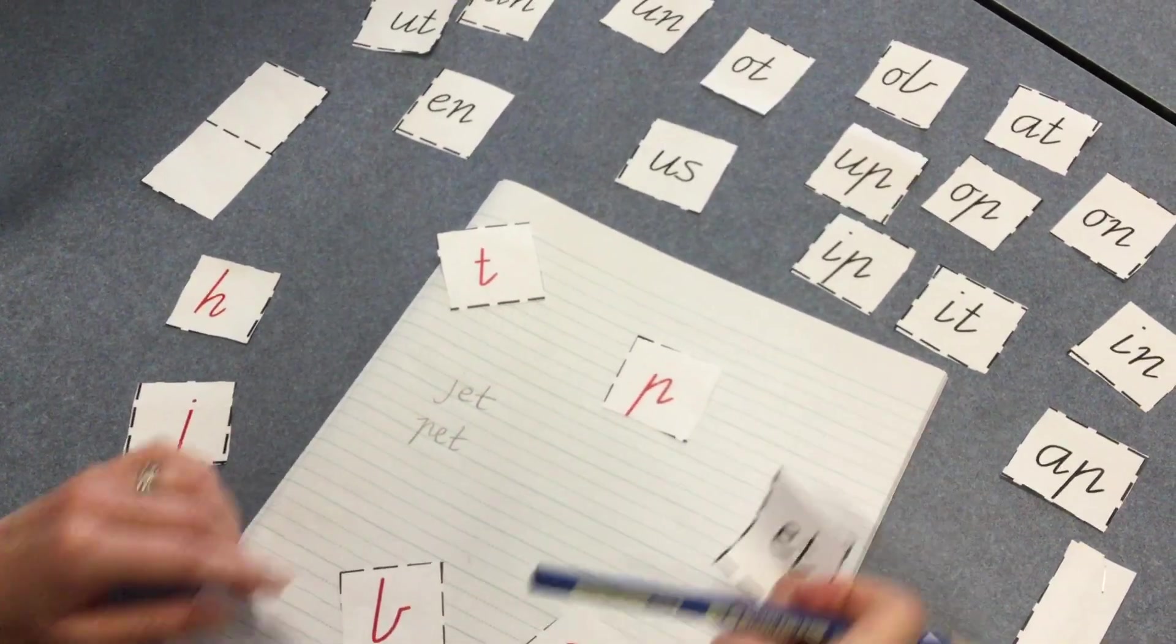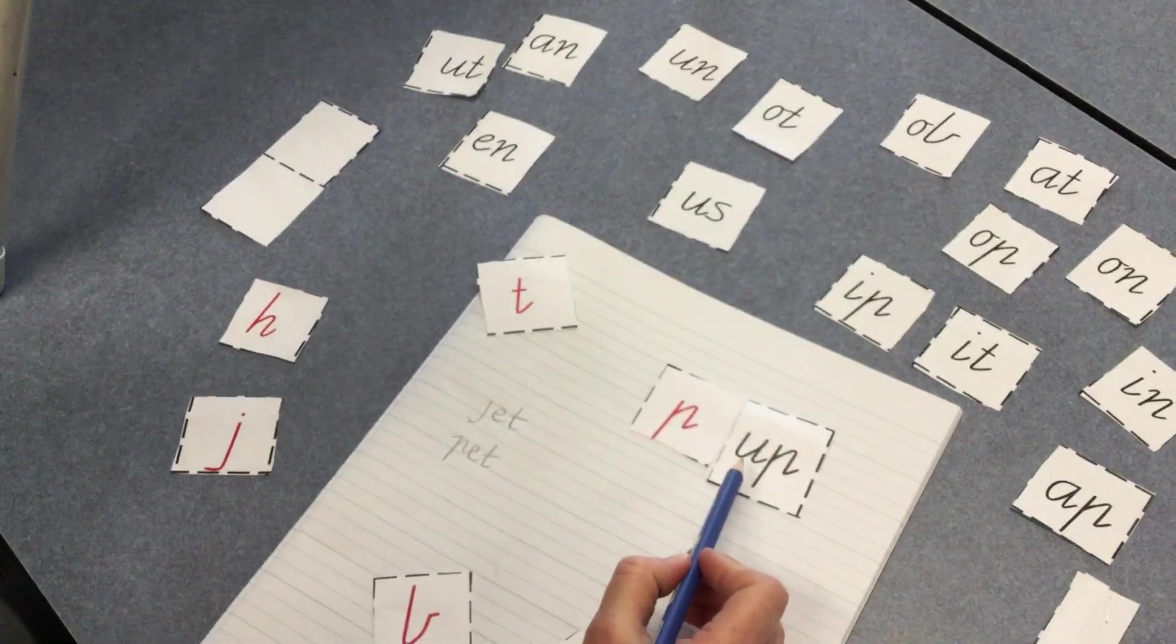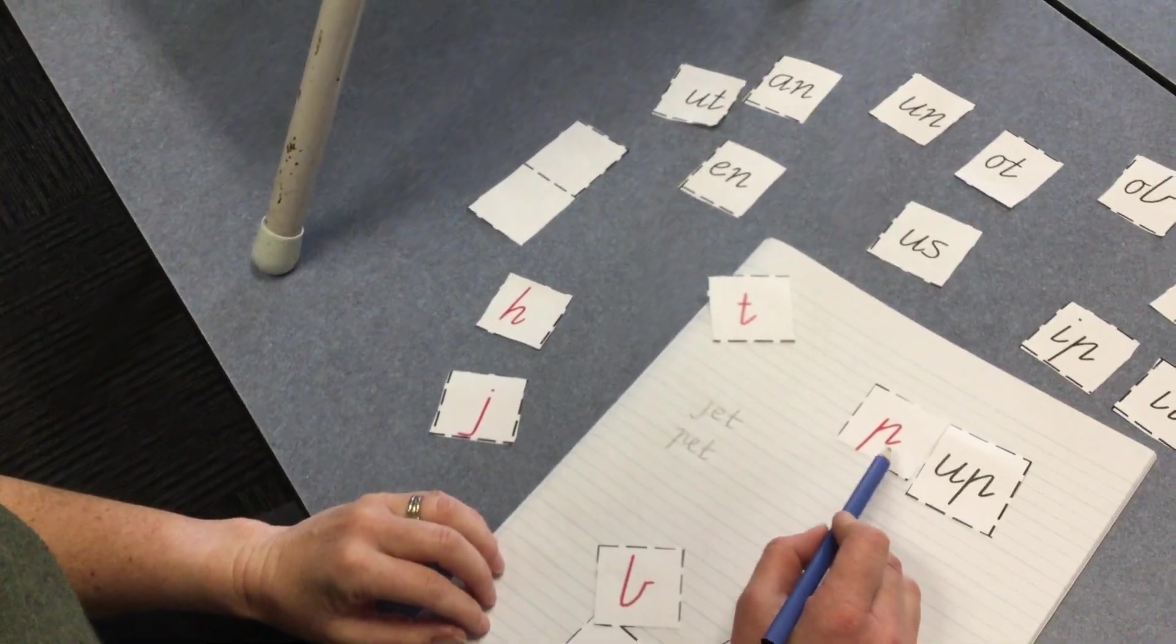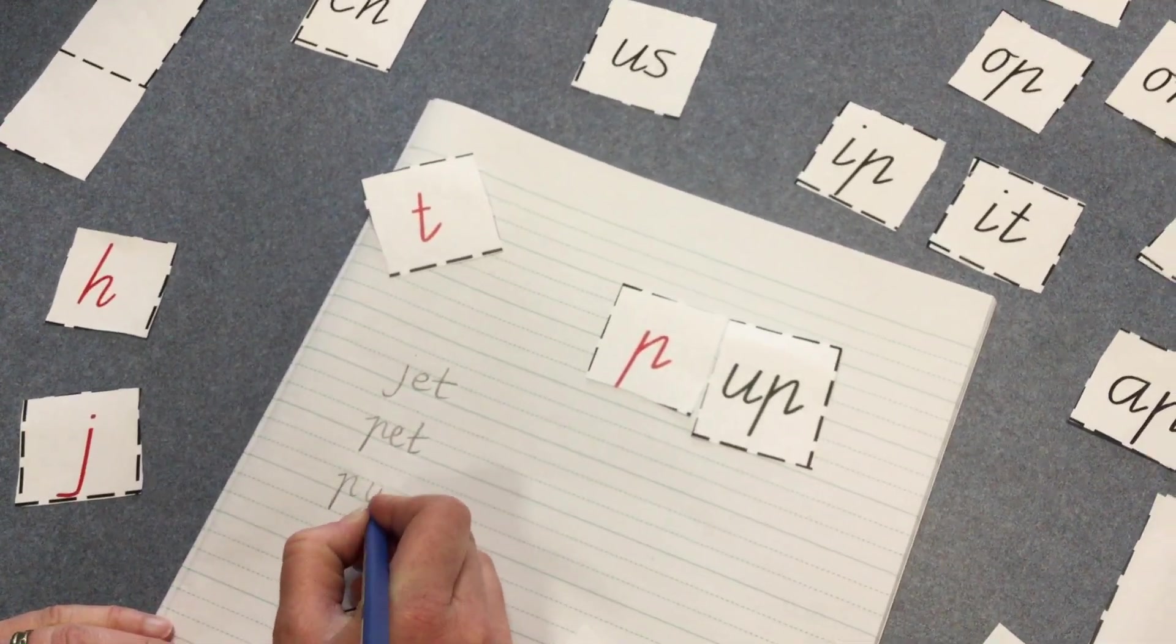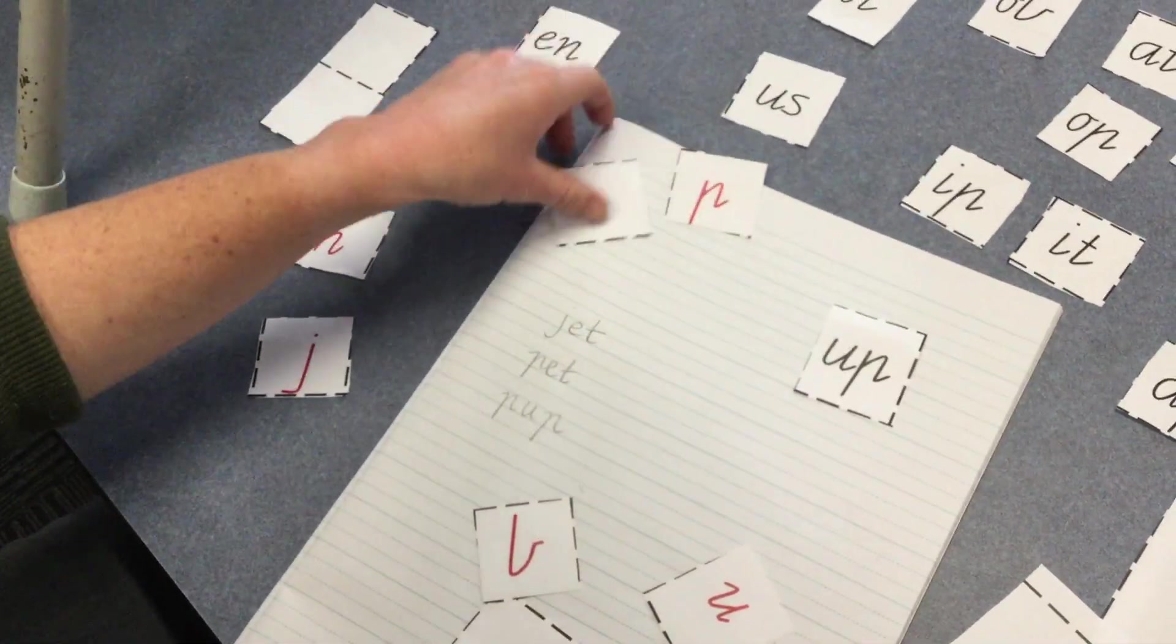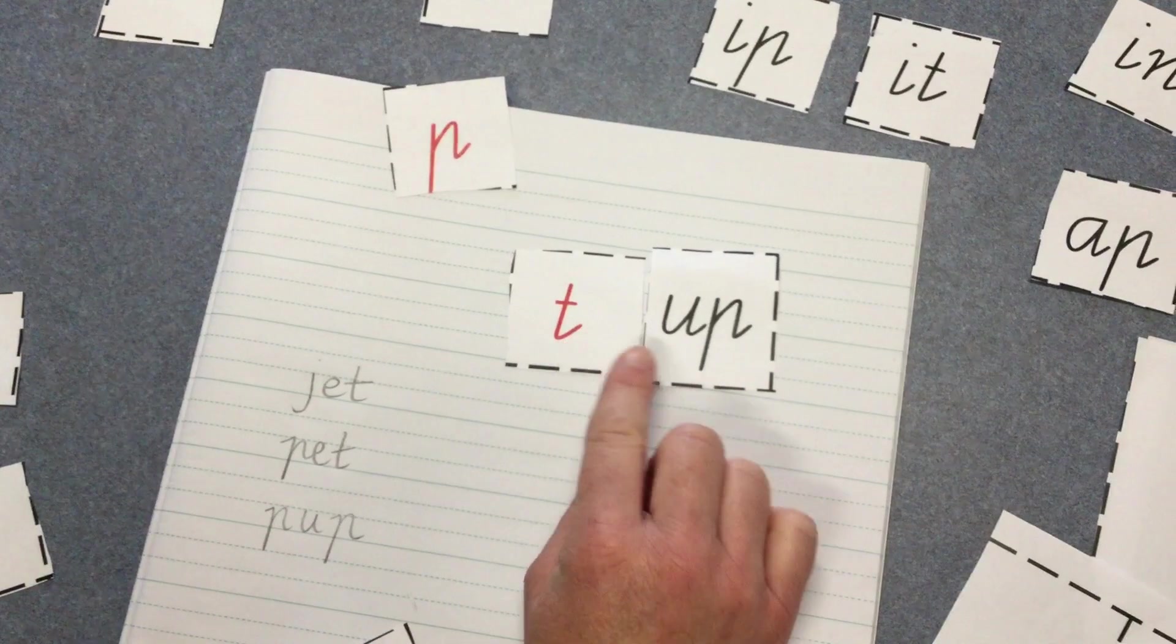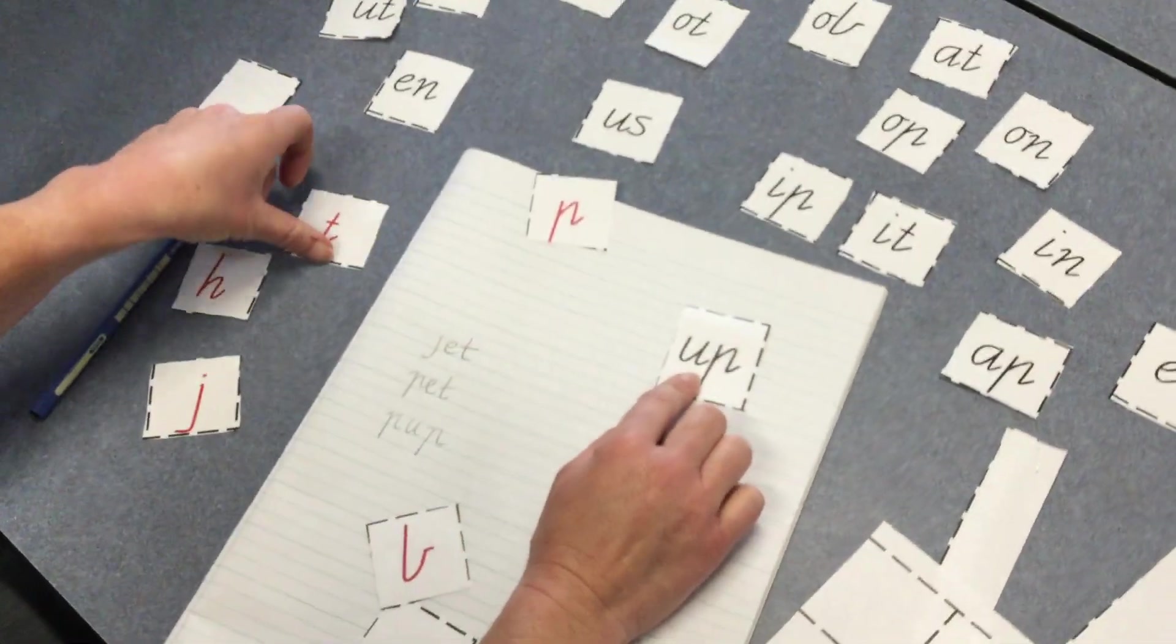I might swap this now. I'm going to keep my starting sound and try a different word family: 'p-up, p-up, pup, pup.' Is pup a word? Yeah, it's a short word for a puppy, isn't it? Pup. I wonder if I could try another one—might not be a real word, but it will give us time to practice these sounds and blending them together. 't-up, t-up, tup.' Is that a word? That's not a word, but we did a really good go of trying to work it out.